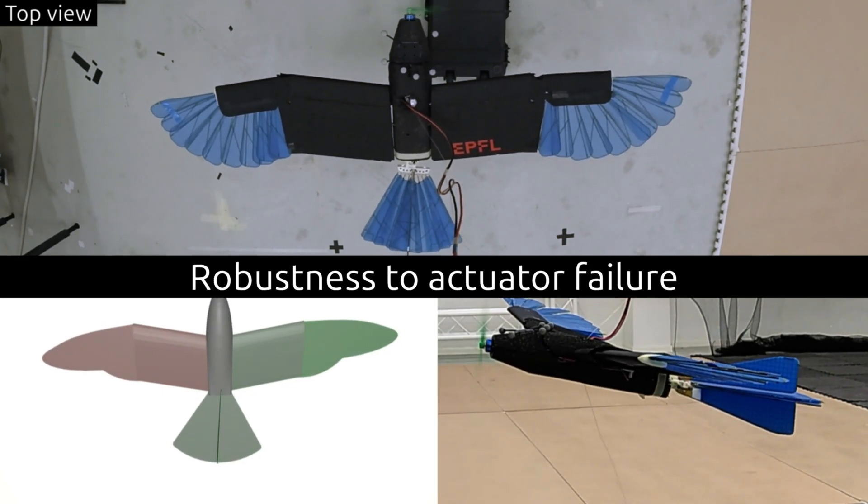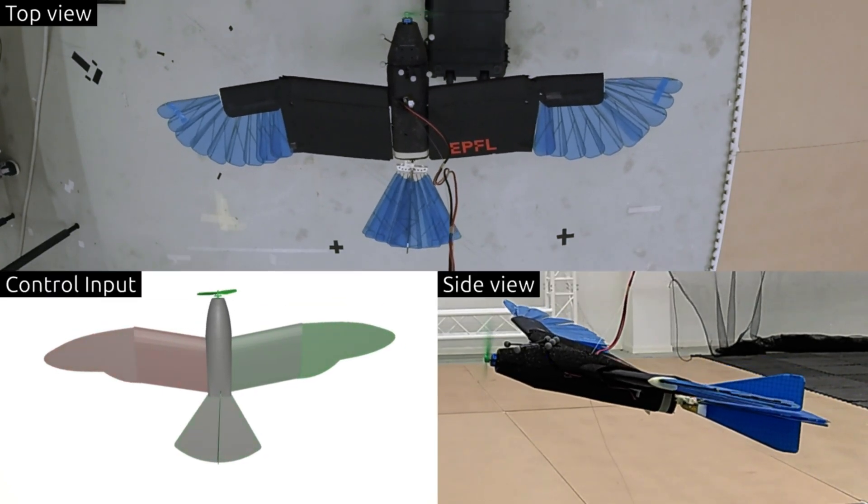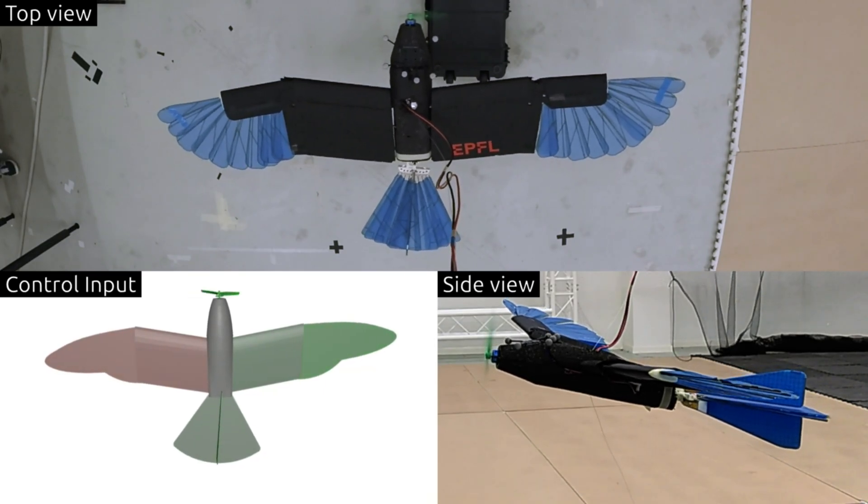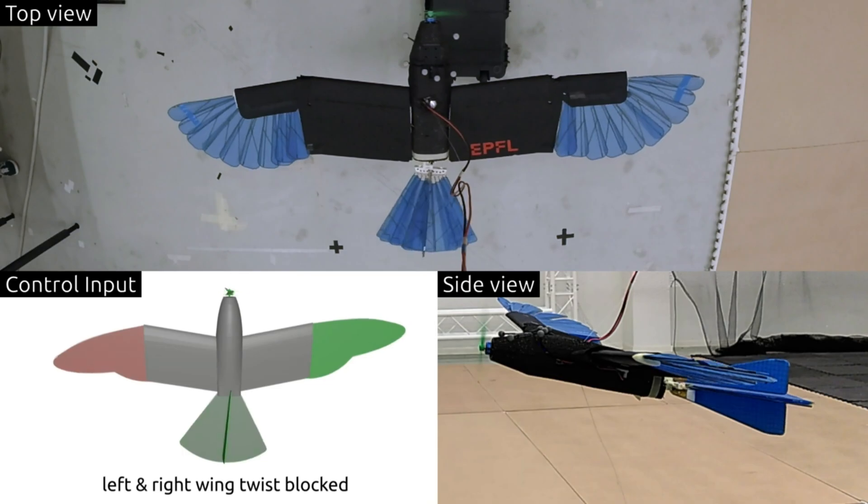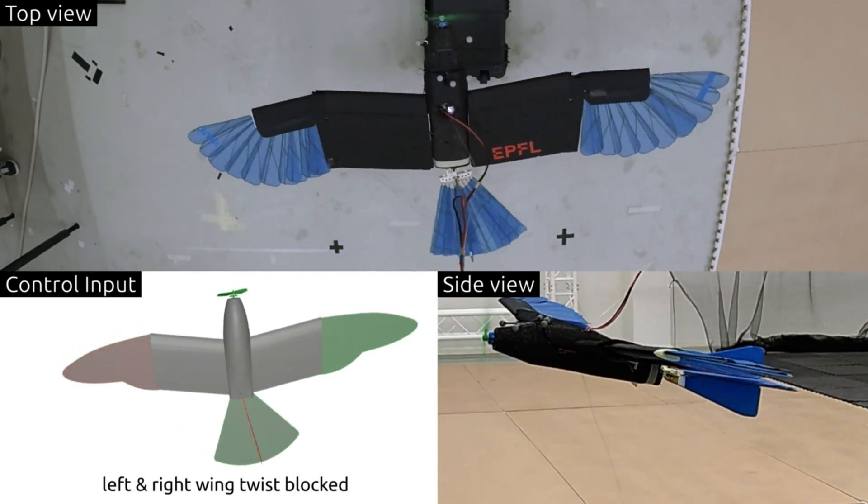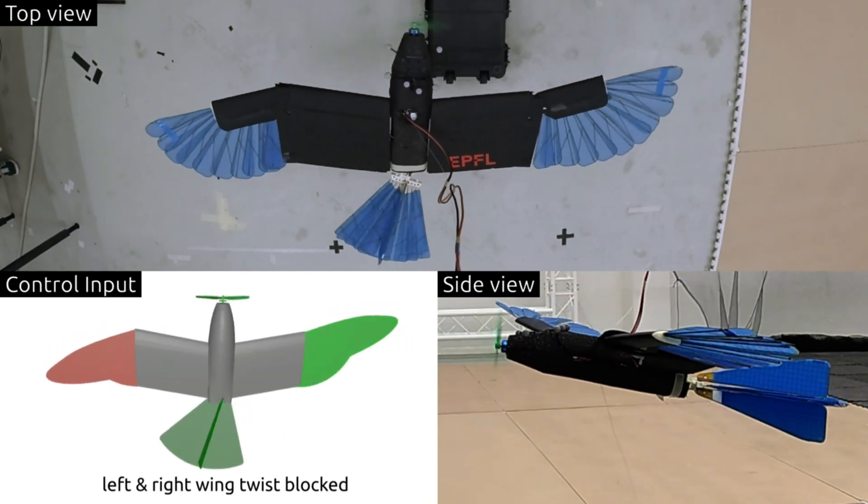Finally, we study the robustness of our method against actuator failure. Here, we block two control surfaces in mid-air without the controller's knowledge, but it remains airborne.